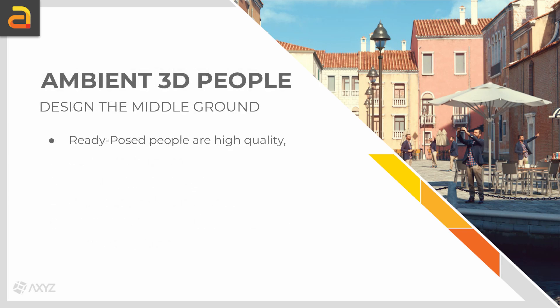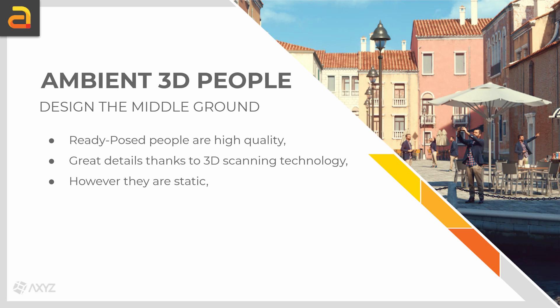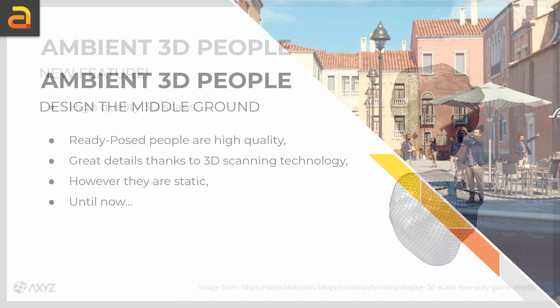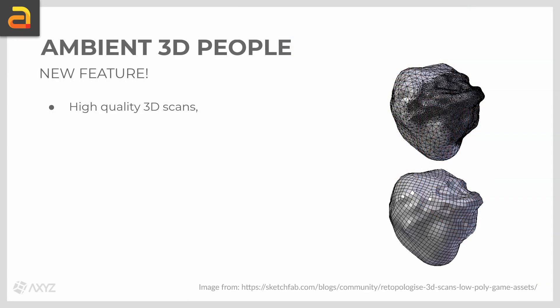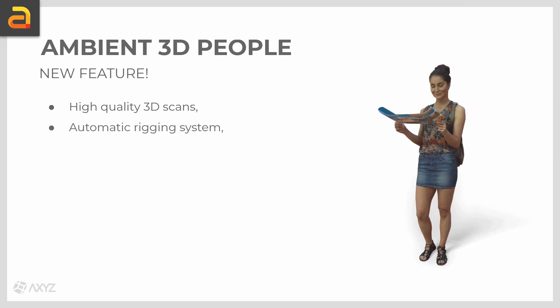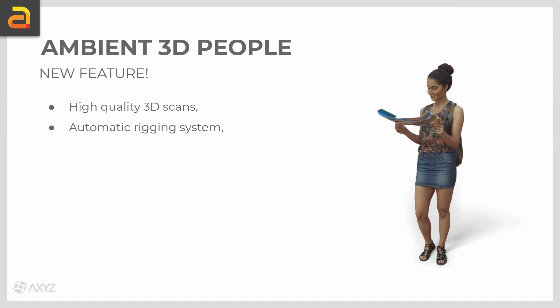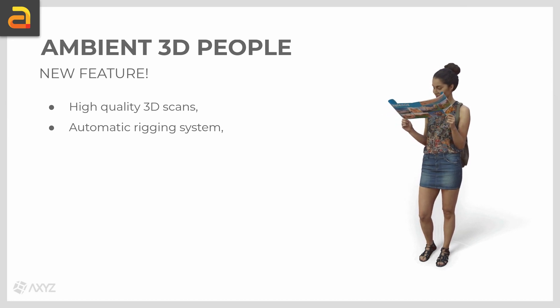The ready post characters are high quality, and this is possible thanks to 3D scanning technology that preserves a lot of the details. However, the main limitation is them being static — until now. While keeping the very high quality 3D scans to preserve all the details, a new automatic rigging solution has been developed to be applied to the existing ready post models.